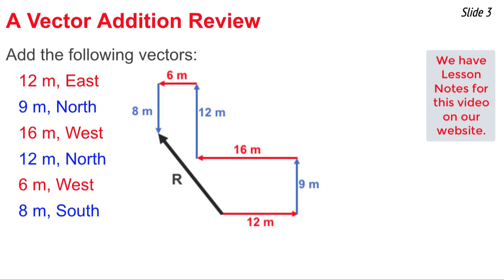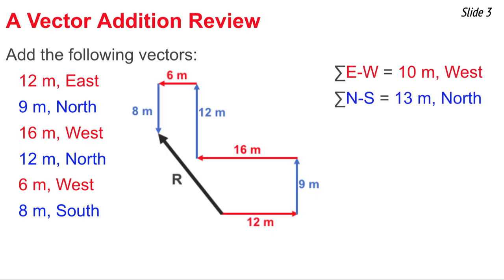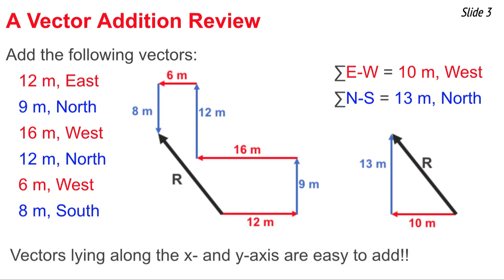If doing this with the graphical method, I would have done all these vector constructions to scale, and then measured the length of the resultant and converted from that length to the real-world magnitude of vector R. But with the analytical method, I would first consolidate these six vectors into two sets: taking the 12 east and the 16 and 6 west to get 10 meters west, and the 9 north, 12 north, and 8 south to get 13 meters north. Then I'd add these two consolidated vectors using the Pythagorean theorem for magnitude and SOH-CAH-TOA for direction. Once every vector is expressed as a single north-south and east-west vector, it's quite easy to add them.